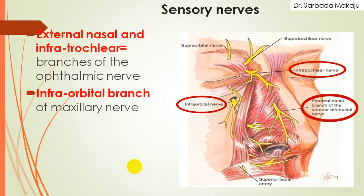Now the sensory supply to the external part of the nose. It is supplied by the external nasal and the infra-trochlear nerve. The external nasal nerve is a branch of the anterior ethmoidal nerve, and the anterior ethmoidal nerve is a branch of the ophthalmic nerve. One more nerve is the infra-trochlear nerve, which is also a branch of the ophthalmic nerve. When you move downwards, there is the infraorbital nerve, which is a branch of the maxillary nerve.